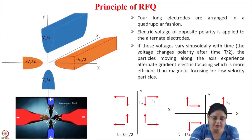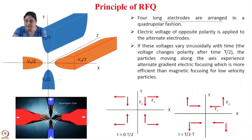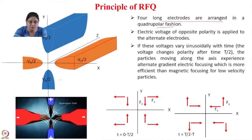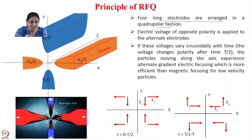In the RFQ, we have four electrodes arranged in a quadrupolar manner. Four long electrodes are arranged in a quadrupolar fashion, and voltages of opposite polarity are applied to alternate electrodes. These electrodes are known as vanes. If both the horizontal electrodes or vanes are at a potential of minus V0 by 2, the vertical vanes will be at a potential of plus V0 by 2. This is like an electric quadrupole.